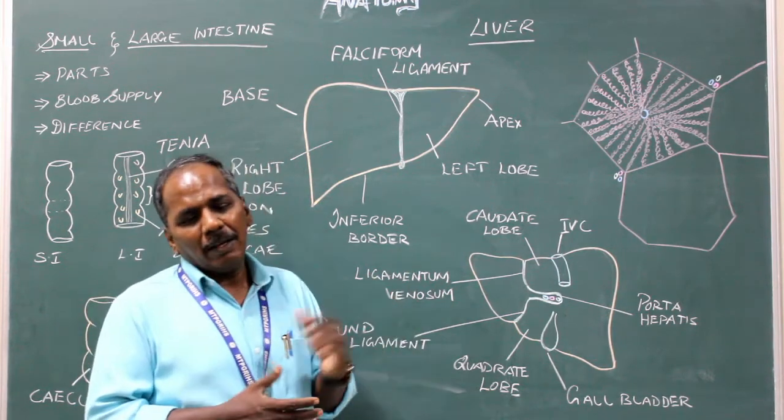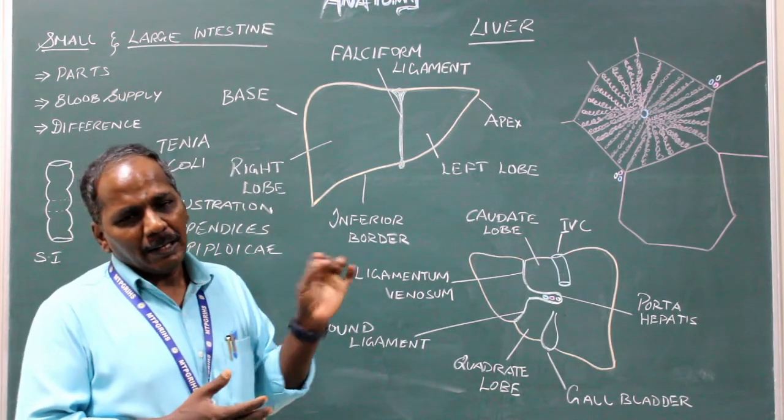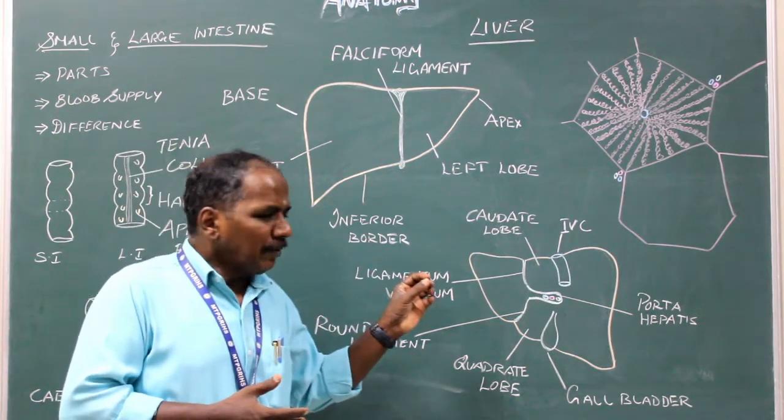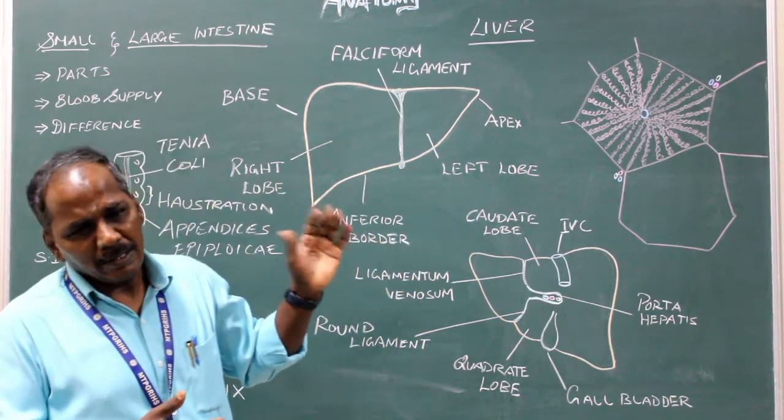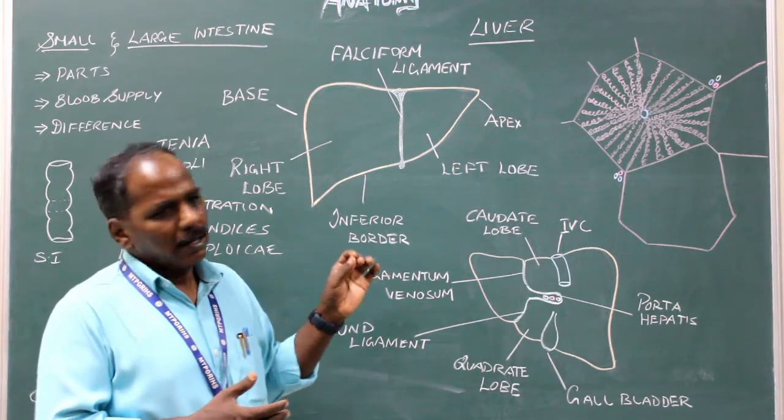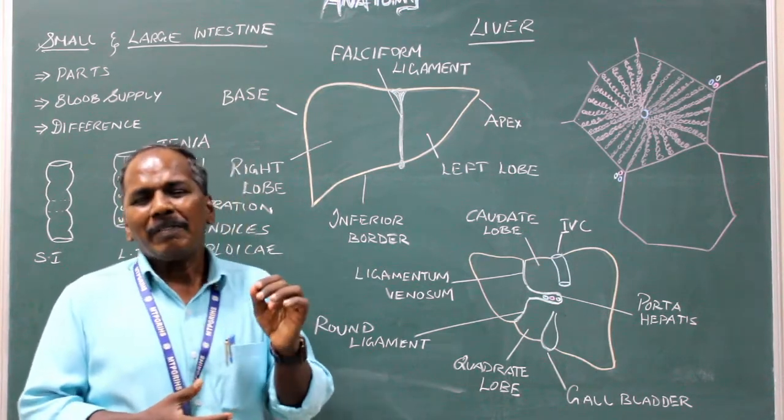Nerve supply: Sympathetic from the fibers arising from celiac plexus of nerves. Parasympathetic: vagus nerve.